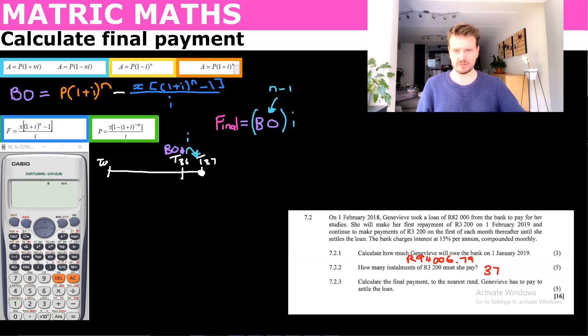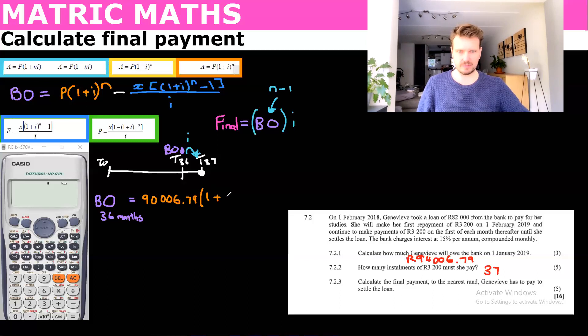So let's do that. Let's say they want the final payment to the nearest Rand Genevieve has to pay to settle the loan. So we're going to get the balance outstanding and let's make it clear that this is 36 months. And so that is going to be the value of the loan, which was 94006.79, but then that gets interest for 36 months.